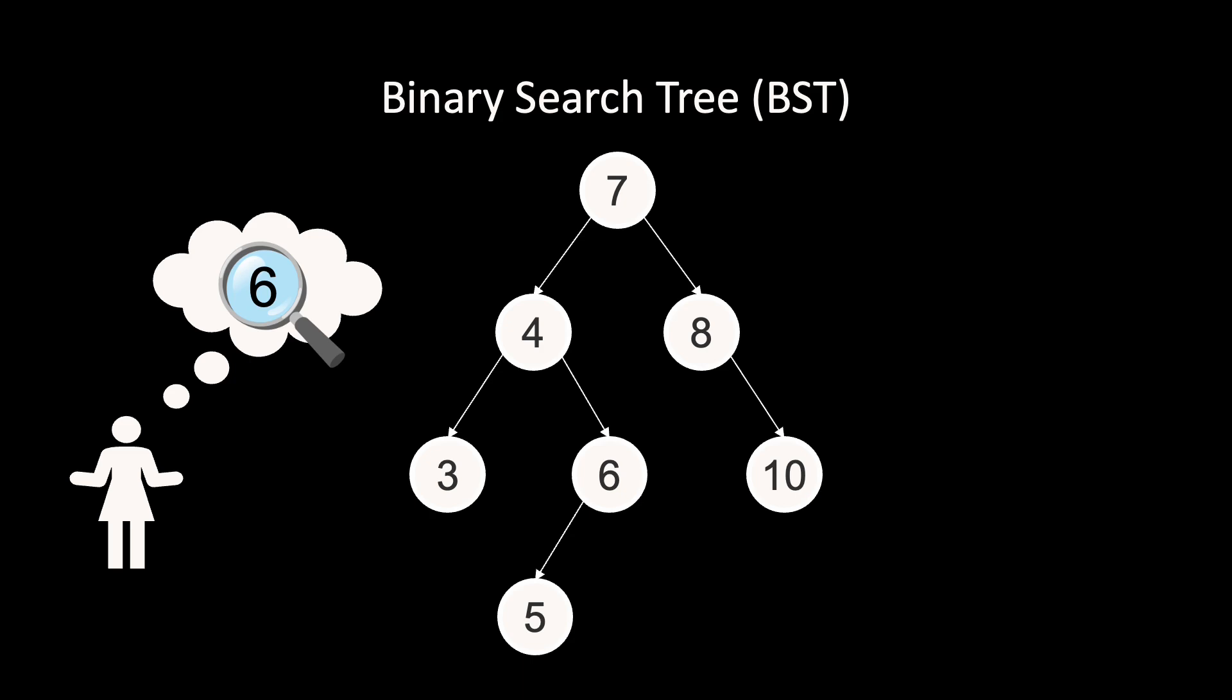For a smaller number than the current key, go to the left child. For a larger number, go to the right child. Now we can recursively start at the root and find our key. For instance, if we try to find key 6, we must go left because 6 is smaller than 7.